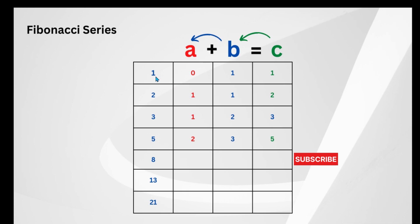So what is the Fibonacci series? The very first number starts from 1. Next is 2. The third number is the sum of the previous two, so 2 plus 1 becomes 3. Same way, 3 plus 2 becomes 5, 5 plus 3 becomes 8, 8 plus 5 becomes 13, and 13 plus 8 becomes 21. This is the Fibonacci series.